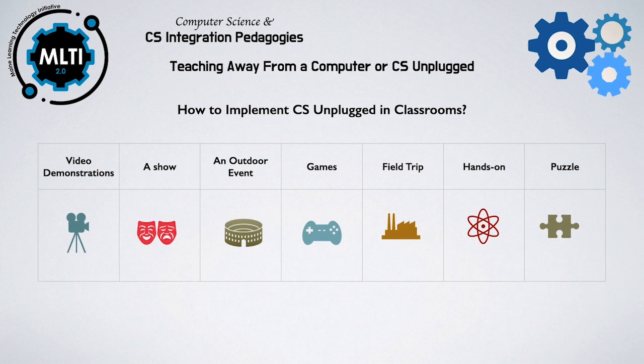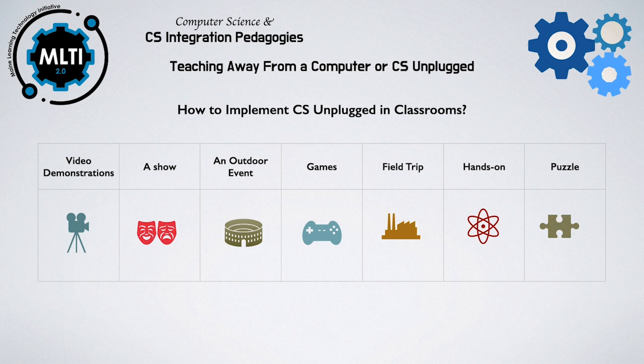In the CS Unplugged model, teachers use physical visual aids to support the learning and to promote computational thinking skills. Other teaching aids include video demonstrations, outdoor events, hands-on activities, board games, field trips, paper and pencil, and puzzles that use cards, strings, and crayons, with lots of running around. You can find many resources on the website CSUnplugged.org.